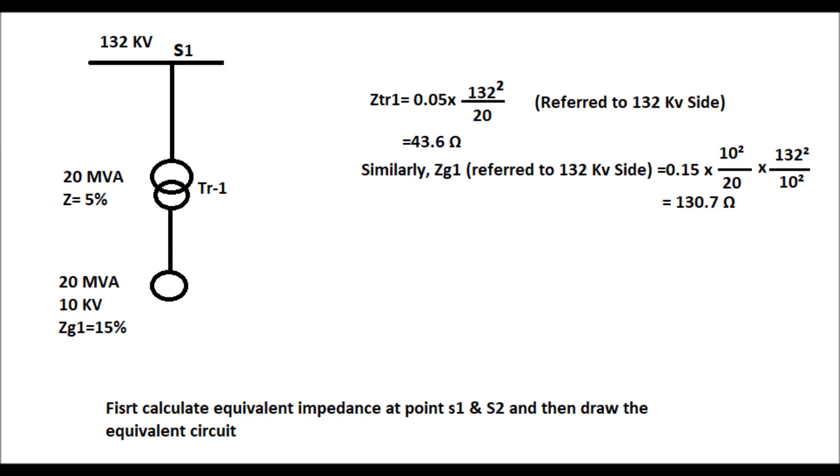First, we calculate the impedance at S1 which is referred to 132 kV side. For transformer, we know that the impedance Z is equal to percentage impedance times kV squared by MVA. By that means ZTR1 equals 0.05 times 132 kV squared by 20, that will come to 43.6 ohm.